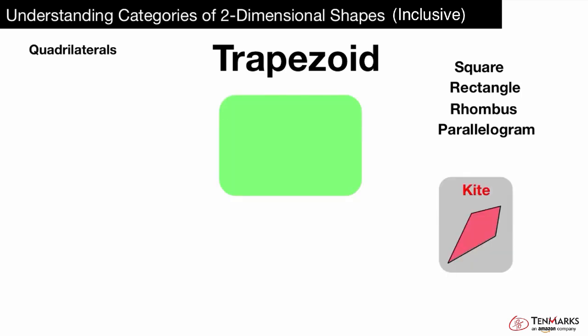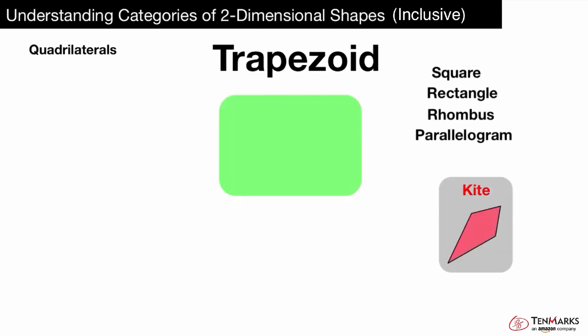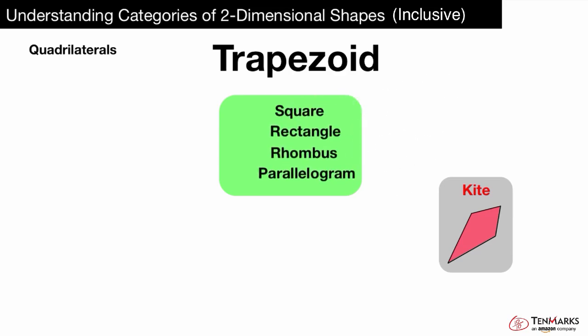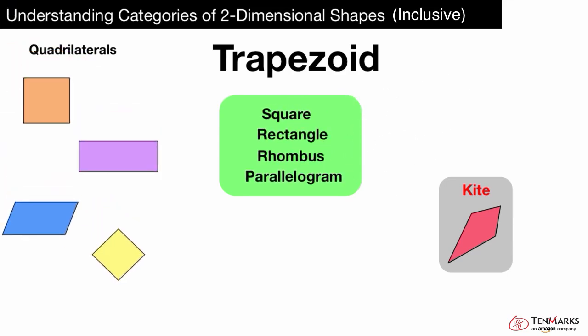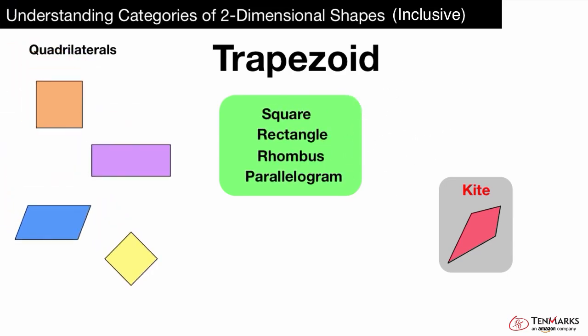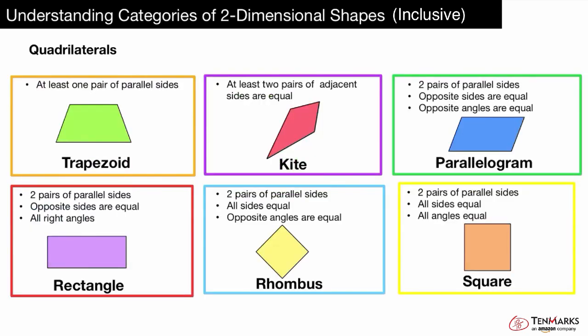This means that square, rectangle, rhombus, and parallelogram are all subcategories or special types of trapezoid. The kite is not a subcategory of trapezoid, but it is a type of quadrilateral. Now you know that some shapes are special types or subcategories of other shapes. Thanks for watching!